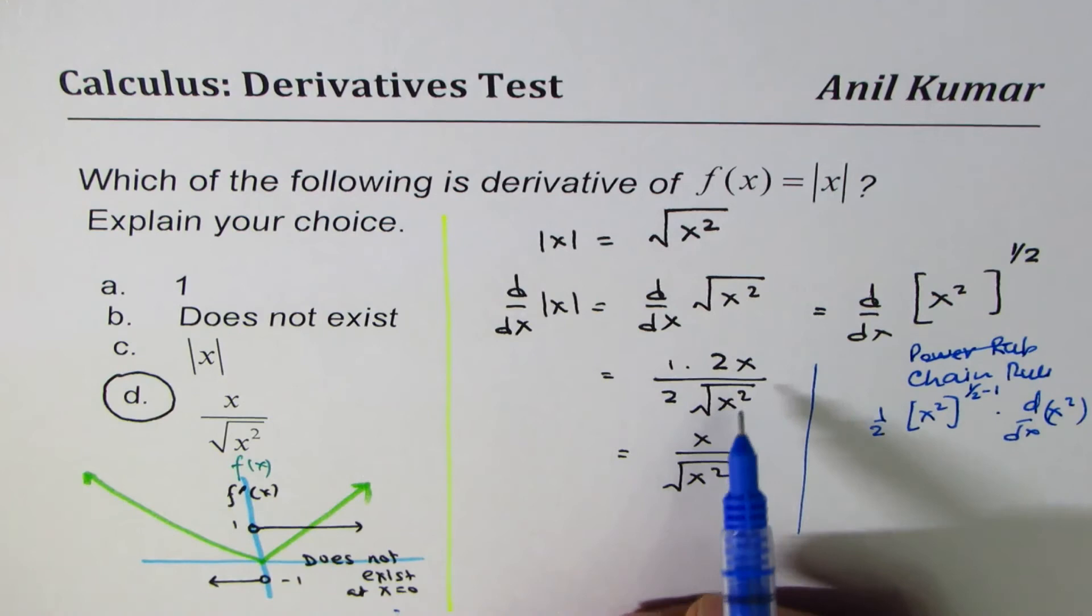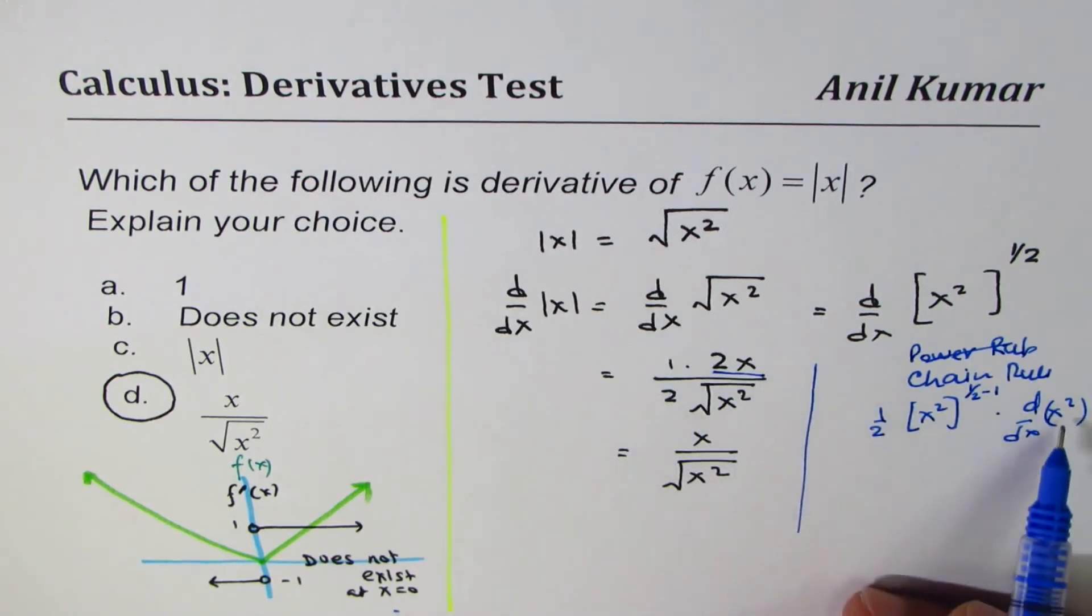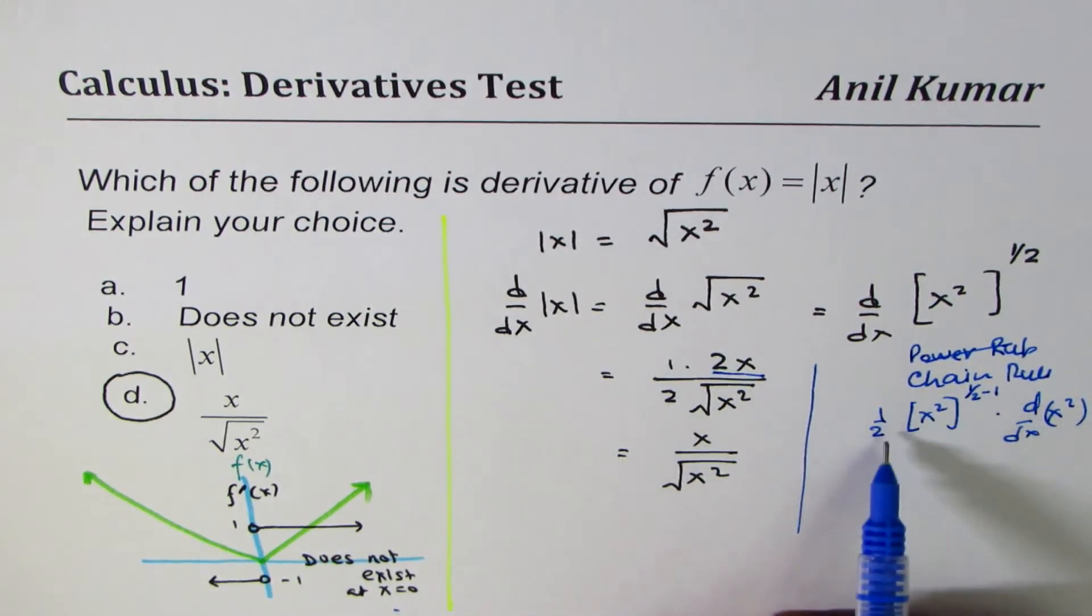And that's how you get this. So, this is the derivative of x squared and that is the derivative power rule. That's how the chain rule is applied.